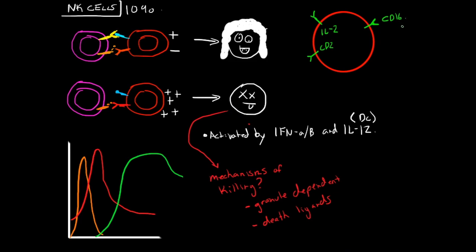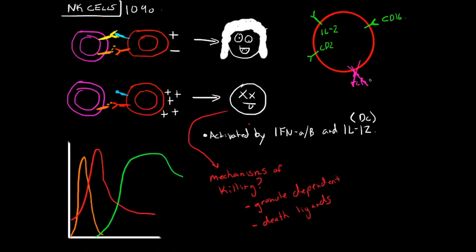Importantly, natural killer cells do not express T cell receptors (TCR), do not express CD3, and do not express CD8. None of these are found on natural killer cells.